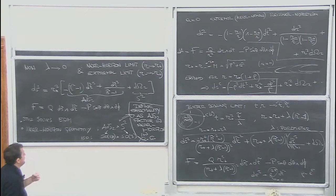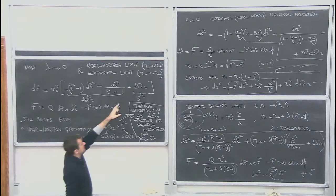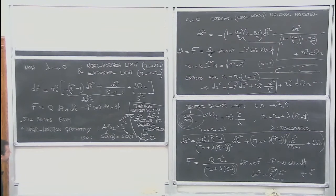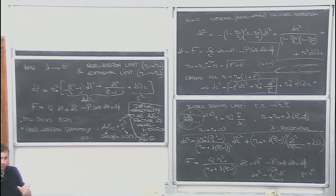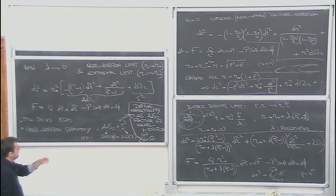Because while we went near the horizon, we also took the extremality limit by sending lambda to zero in the way that is defined in these three boards. So we end up with the AdS2 times S2 geometry. It has a lot of symmetry, and it should be the relevant geometry for computing the entropy. Now we will see how we can do that.